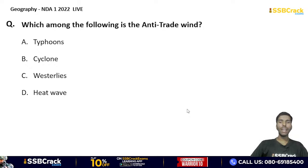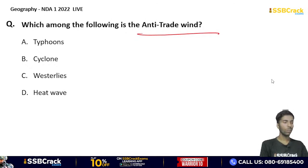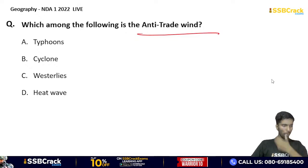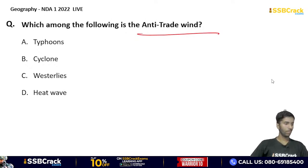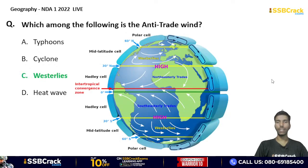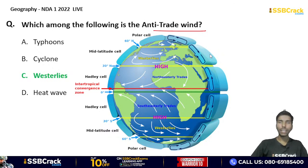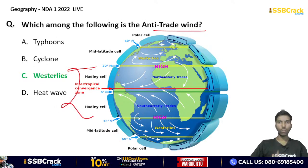Which one of the following is an anti-trade wind? The correct answer is option C — westerlies. Westerly winds blow from west to east, which is why they are named westerlies. Westerlies are a type of anti-trade wind and blow between 30 degrees north and south latitude.